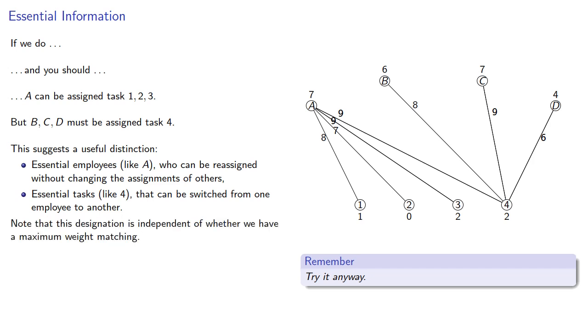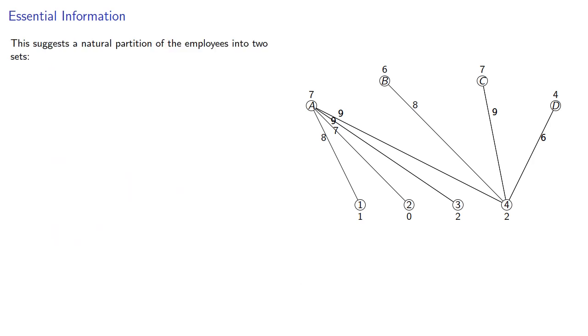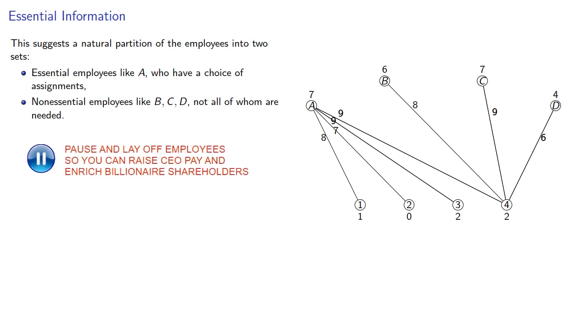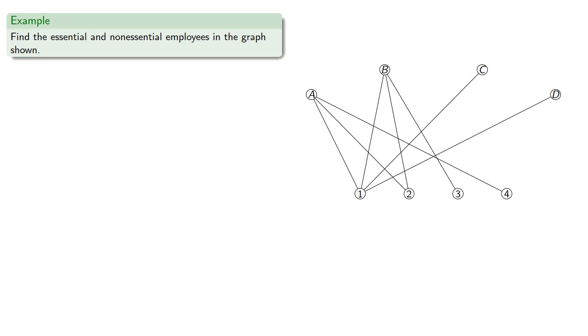Note that this designation is independent of whether we have a maximum weight matching. And this suggests a natural partition of the employees into two sets. Essential employees, like A, who have a choice of assignments. And non-essential employees, like B, C, and D, not all of whom are needed.